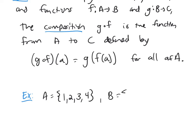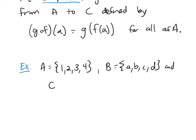B is going to be the set A, B, C, D. And C is going to be the set R, S, T, U, and V.